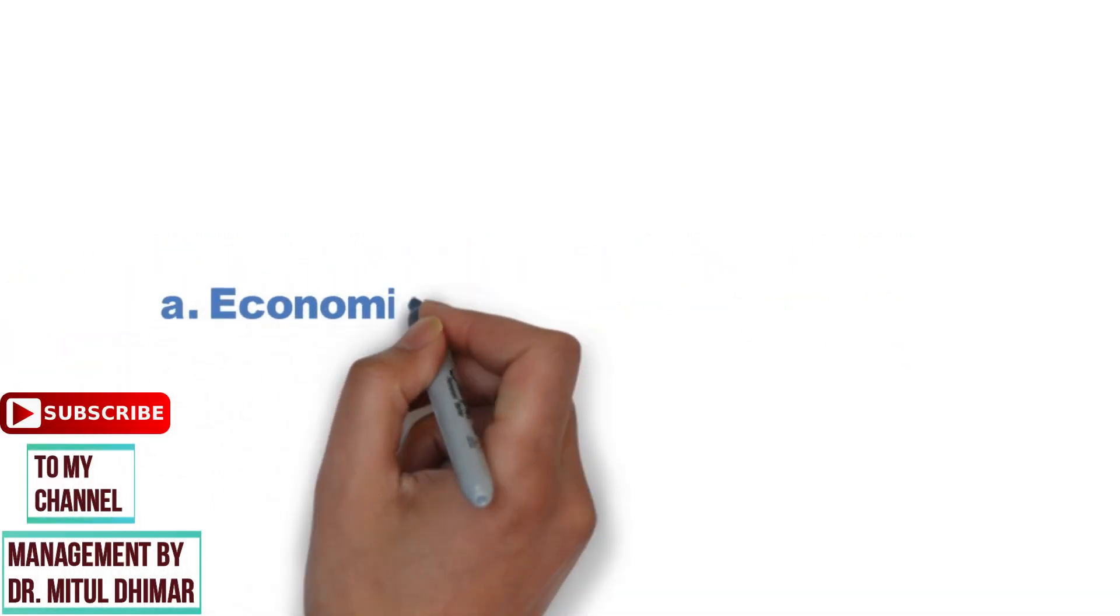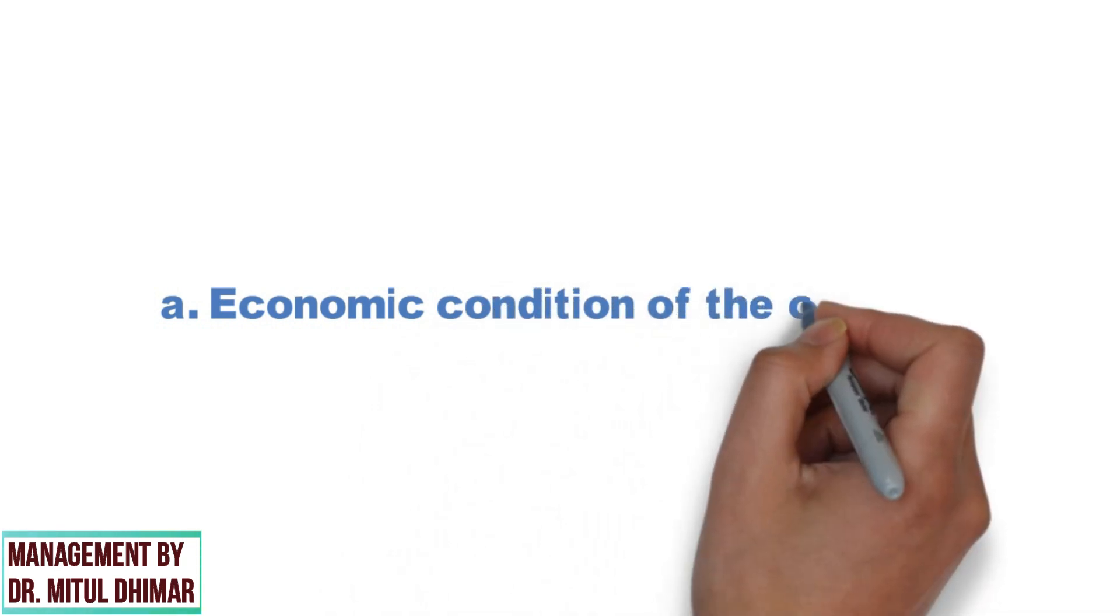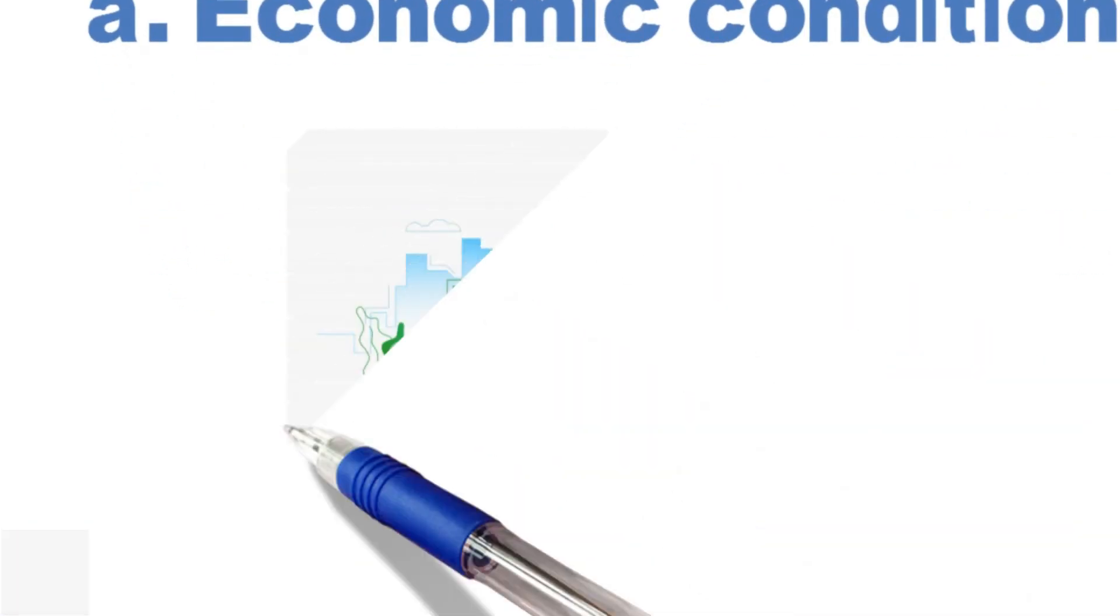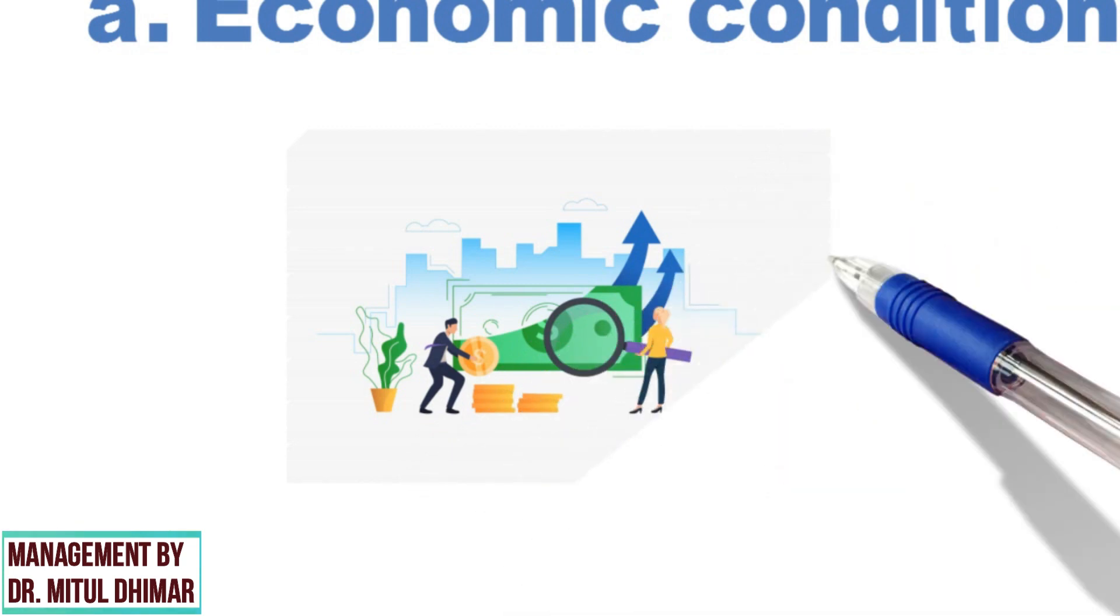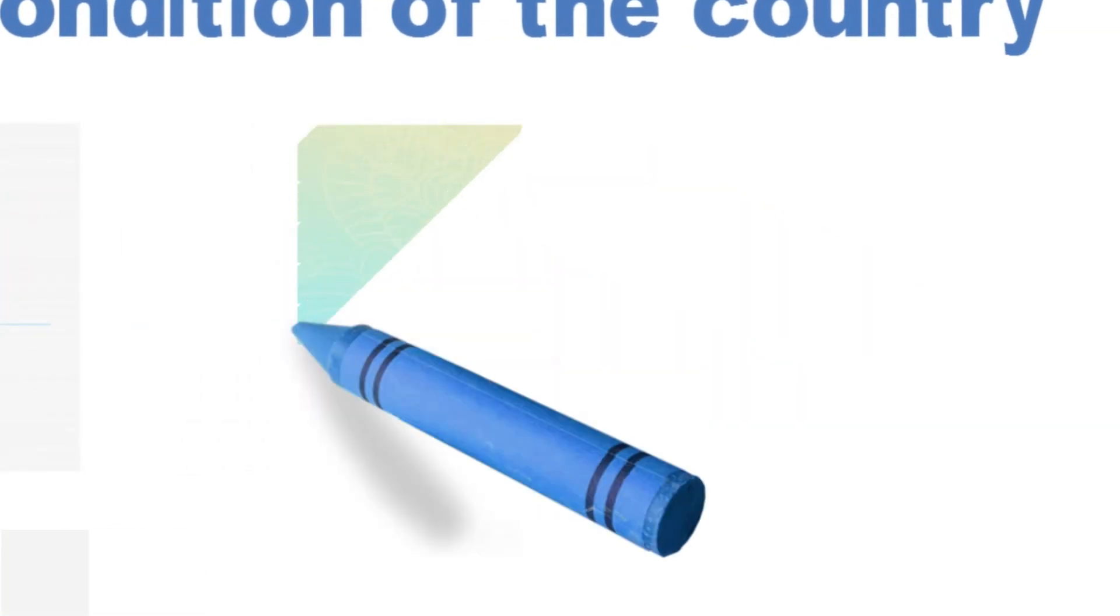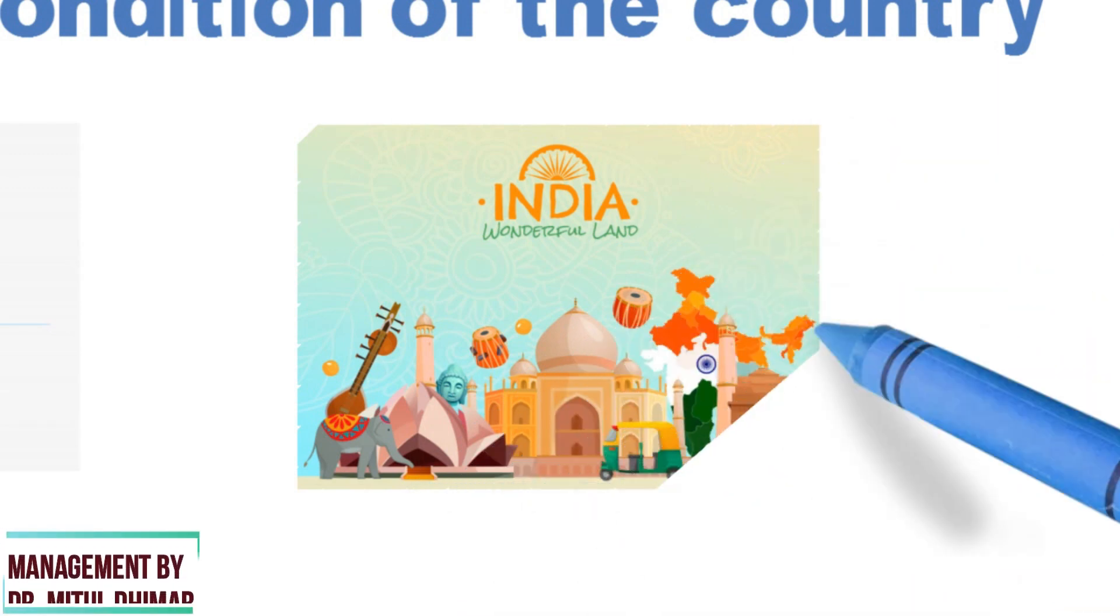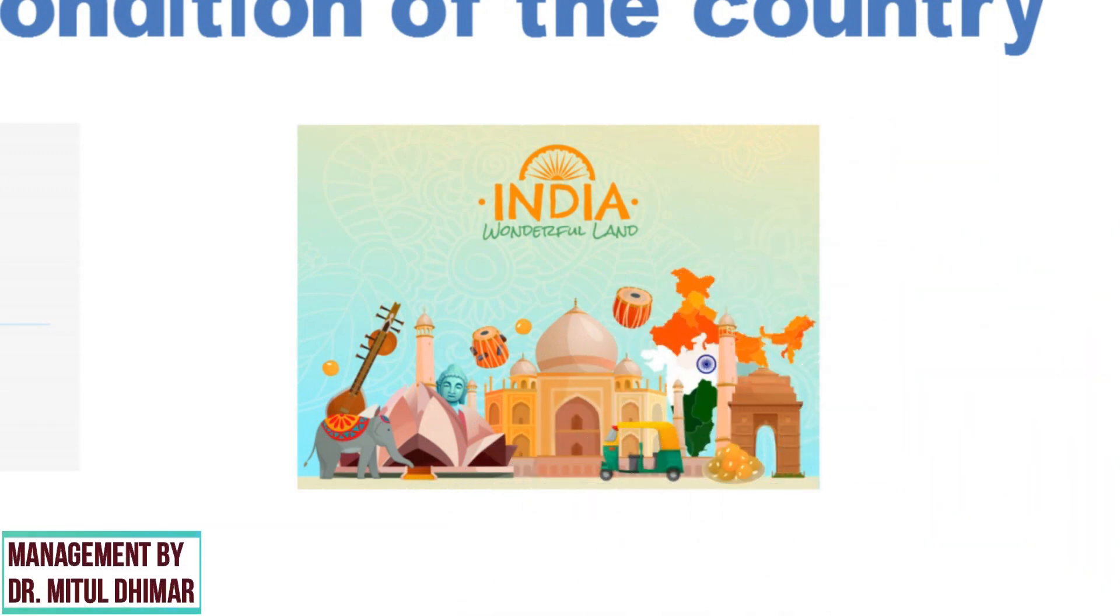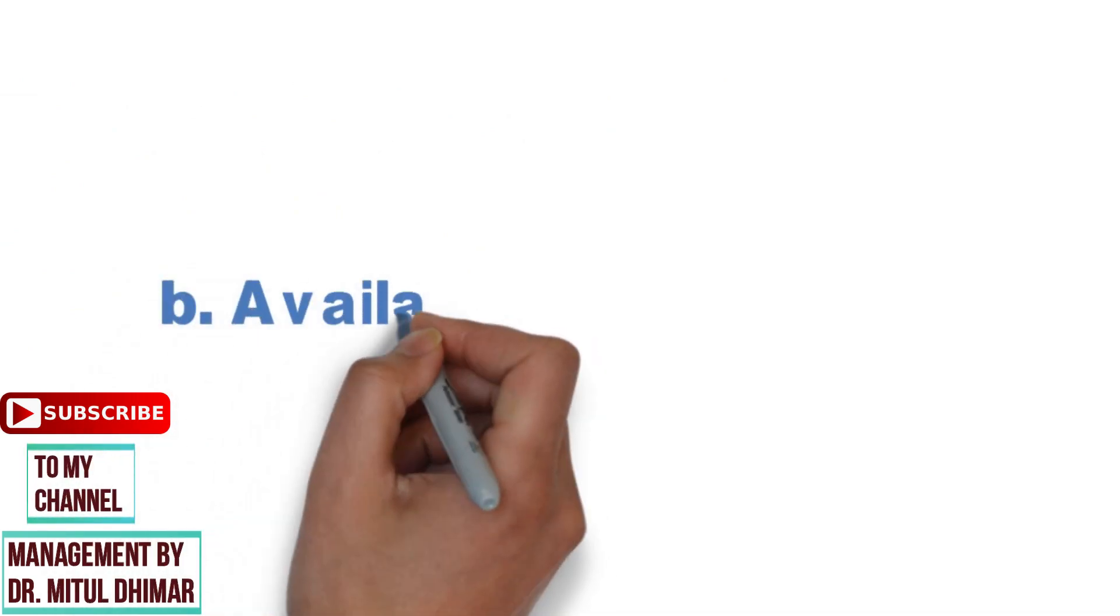First factor is economic condition of the country. The country's economic condition affects the company's operations. In economically poor countries, short or direct channels are used to sell products at a low price. For example, in developing countries like India, indirect channels are typically used to distribute products.